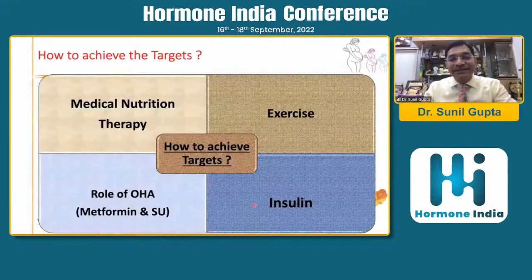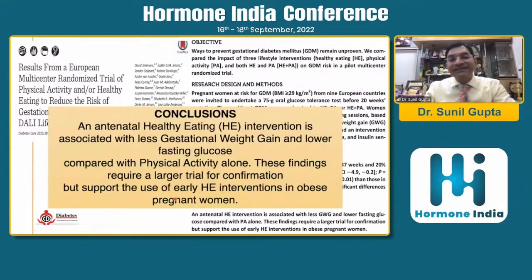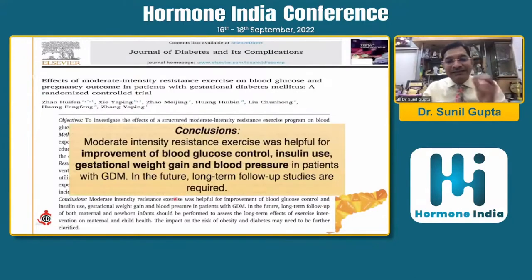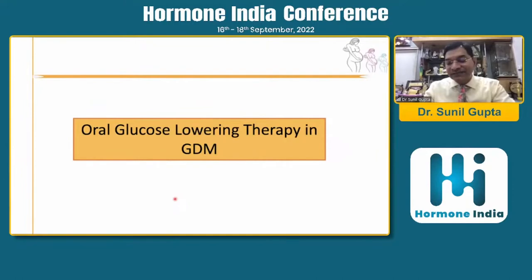How to achieve these targets? Medical nutrition therapy and exercise. Almost 70% of GDM will do well with MNT and exercise; few will require pharmacotherapy. A European multicentric randomized controlled trial showed that antenatal healthy eating intervention is associated with less gestational weight gain and lower fasting glucose compared to physical activity alone. Exercise data also shows that moderate intensity resistance exercise helps improve blood glucose control, insulin use, gestational weight gain and blood pressure. Physical activity and MNT are important for GDM.